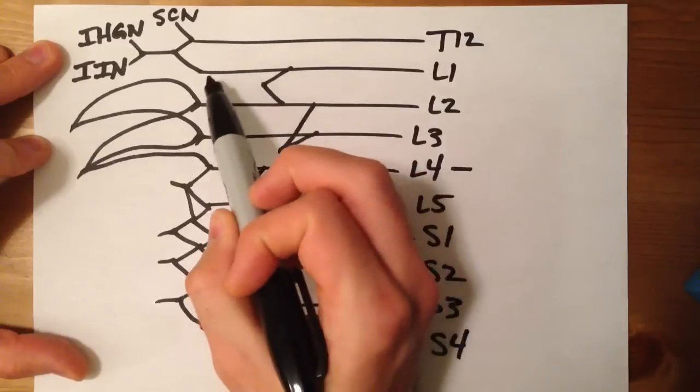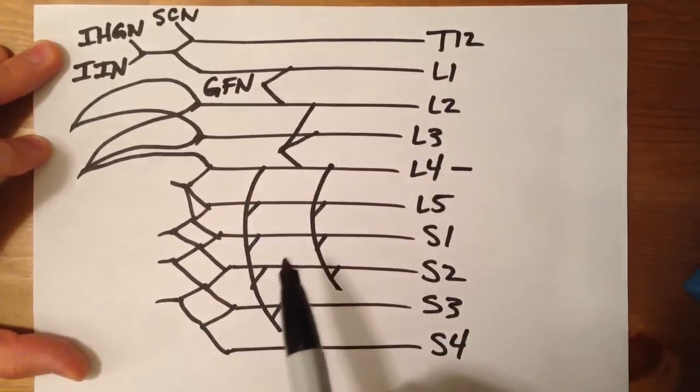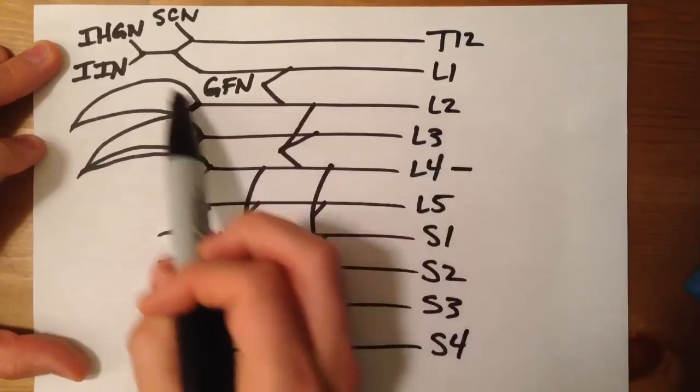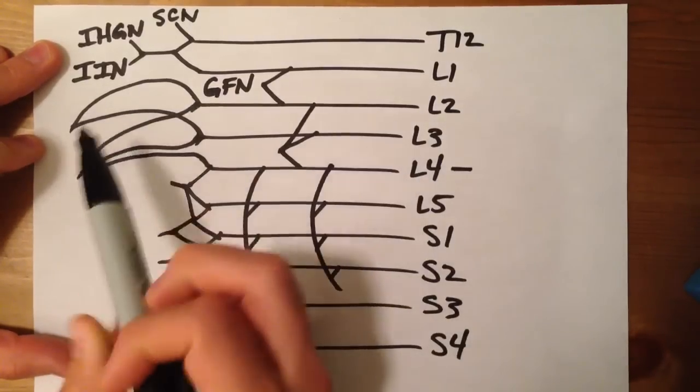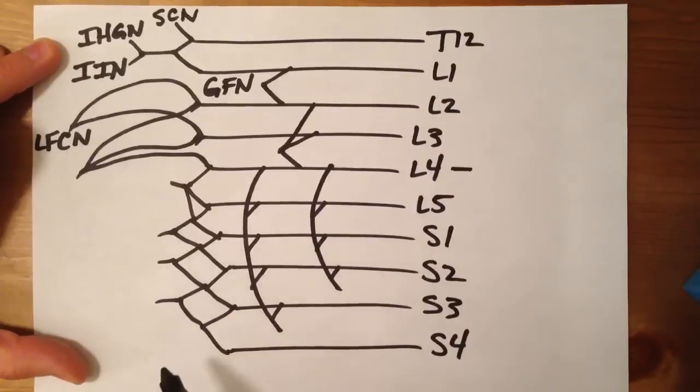L1, L2 is going to be your genitofemoral nerve. L2 to L3, that one's going to be your lateral femoral cutaneous nerve.